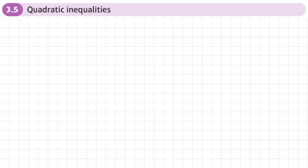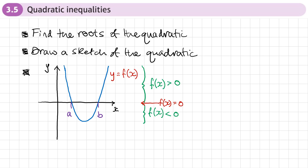This is the fifth section of chapter 3 on equations and inequalities, and this section is on quadratic inequalities. To solve a quadratic inequality, first we need to find the roots of the quadratic.